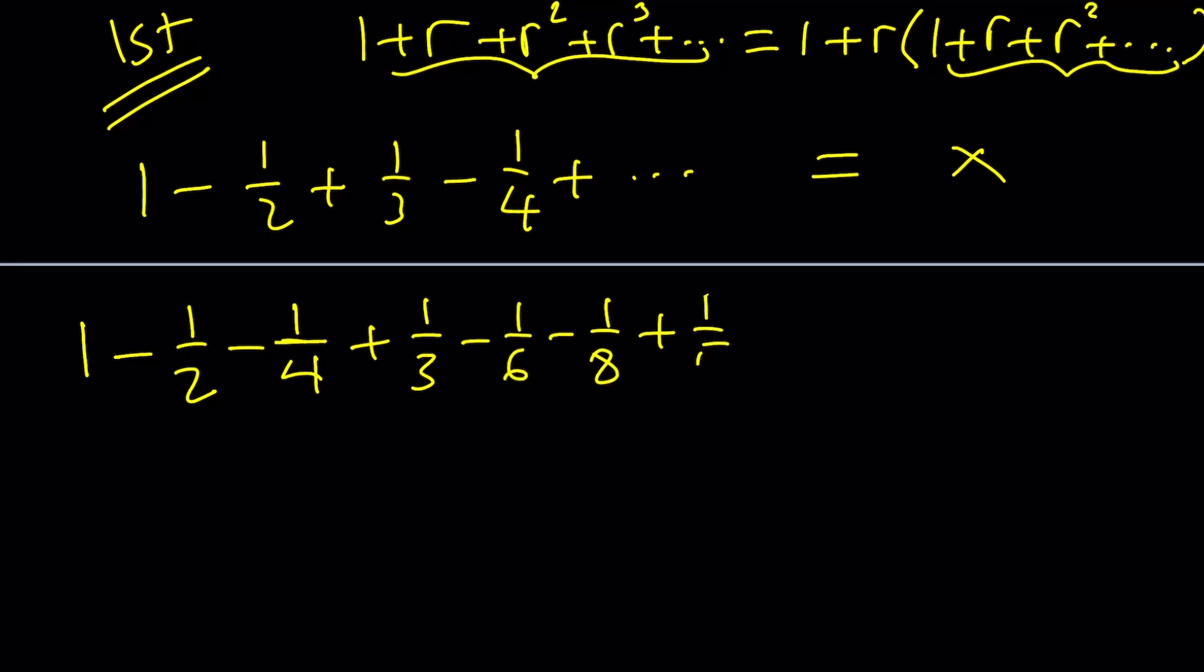And then I want to go to 1 fifth. Notice that I always have these odd terms. So I'm making groups of three. Of course, this will be followed by 1 over 10, and then 1 over 12. And if you look at the even numbers, 2, 4, 6, 8, 10, 12, they make sense. If you look at the odd numbers, 1, 1 third, 1 fifth, that also makes sense. And of course, then I'll continue with 1 seventh, 1 14th, so on and so forth.